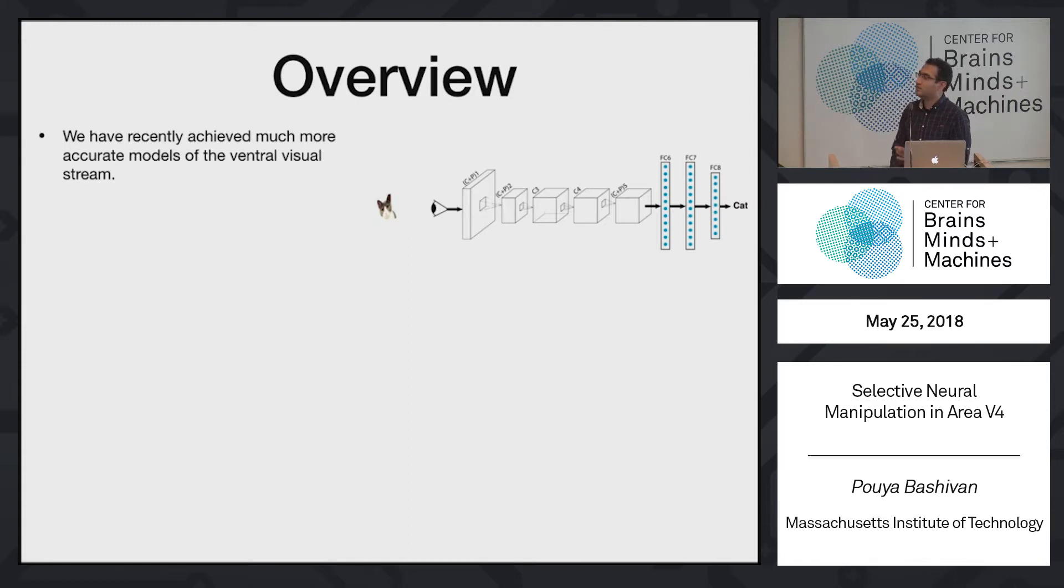The way that they're used to predict the activity of neurons is that we first take a convolutional neural network, and then we train these parameters. We train the parameters in the convolutional network by showing a lot of images and then telling the network what object is the prominent object in those images. And by repeating this procedure many times, we basically optimize for parameters in these networks.